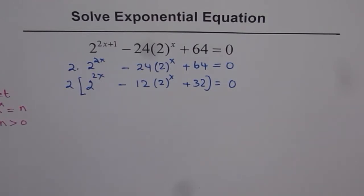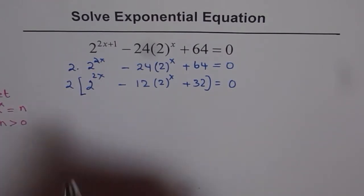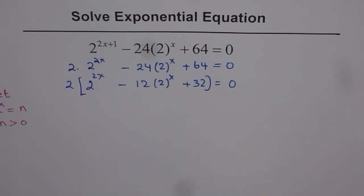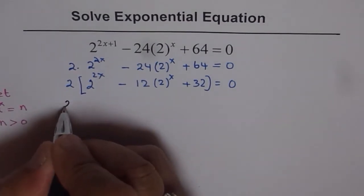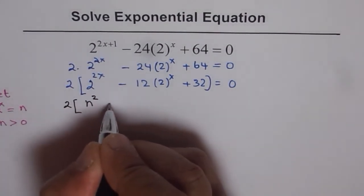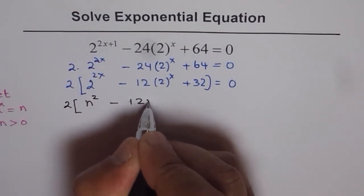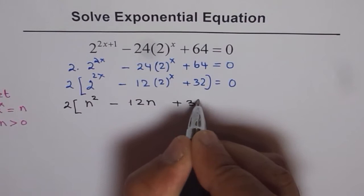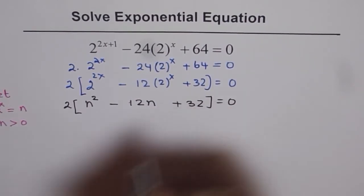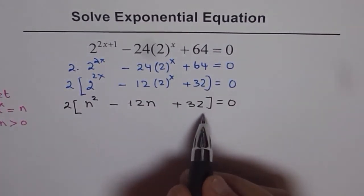So we will rewrite the equation with n instead of 2 to the power of 2x. We get 2 times n squared minus 12n plus 32 equals to 0. Now, this equation can be factored.